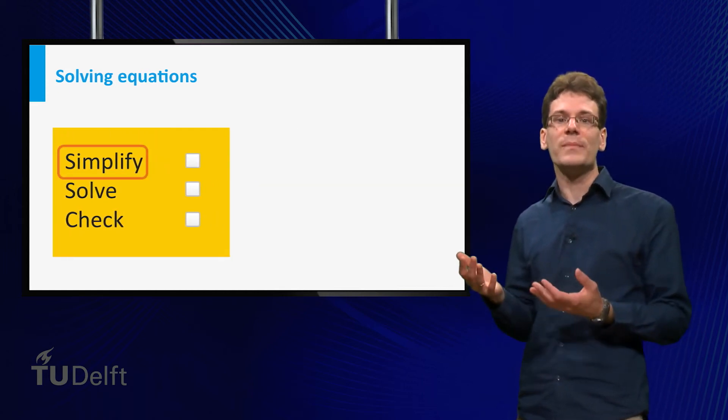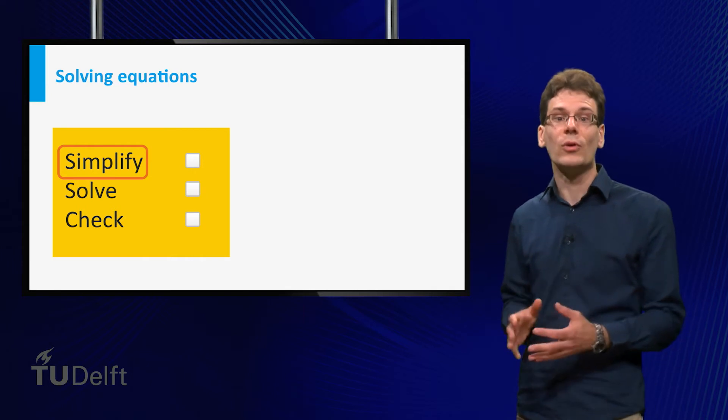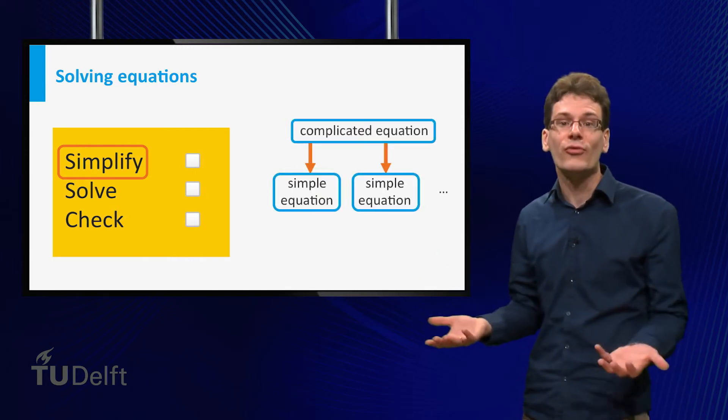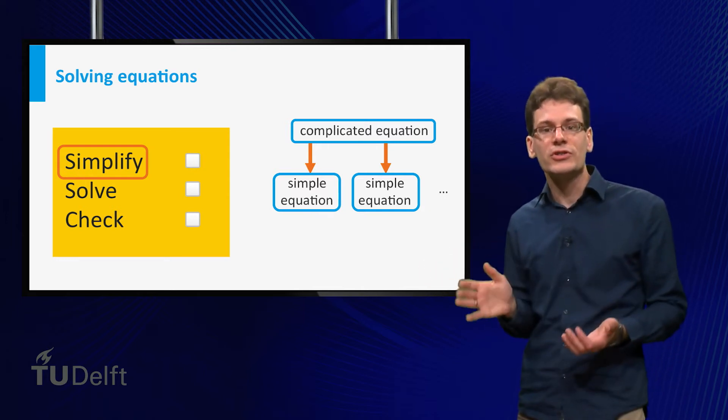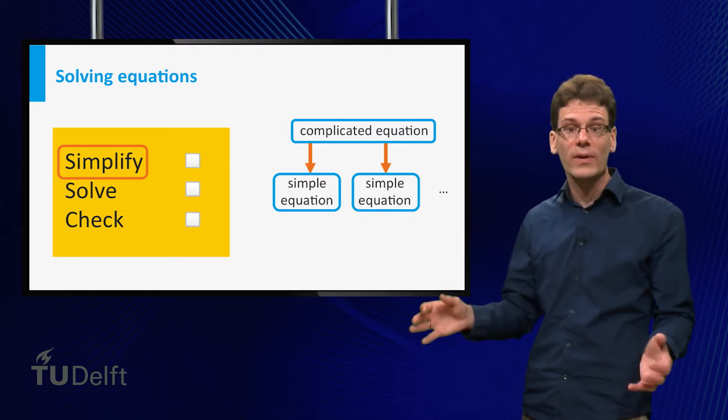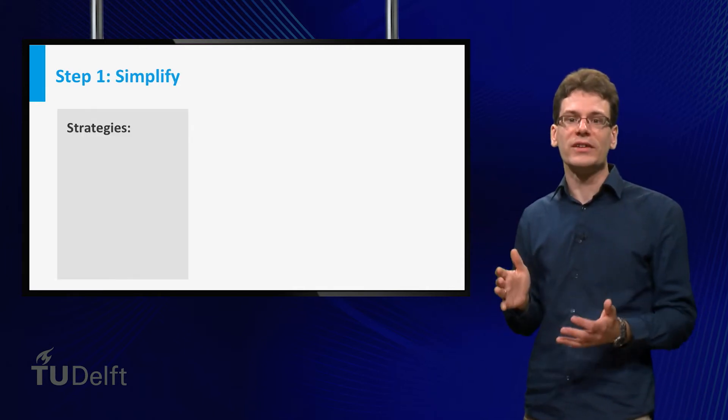To solve an equation, the main step is to simplify or reduce it to a form that you know how to solve. The idea is to transform the equation into one or several simpler equations, in such a way that any solution to the new equations is also a solution to the old equation. Let's look at some strategies.